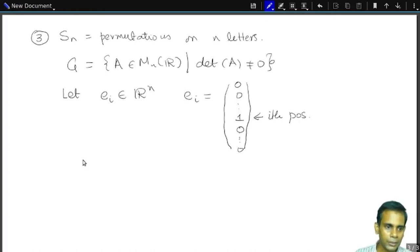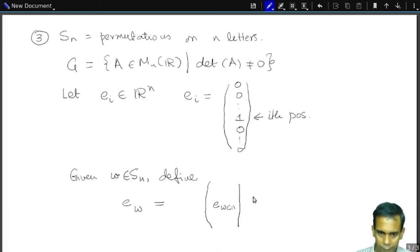And so given a permutation ω in S_N, define E_ω to be the matrix. I'll give it as a block matrix. Each, the first column of this matrix is E_ω(1). The second column is E_ω(2) and so on.